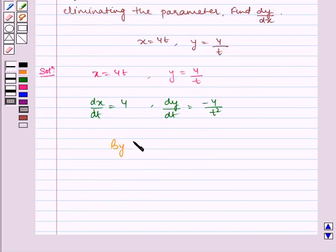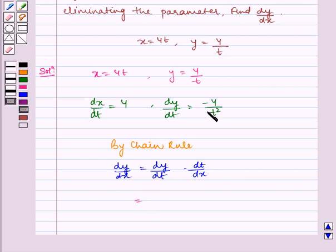Now, by chain rule, dy/dx equals dy/dt multiplied by dt/dx, which equals minus 4 over t squared multiplied by dt/dx. We know dx/dt is 4.